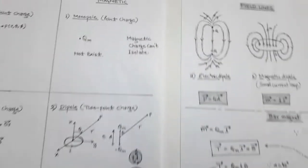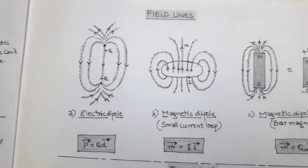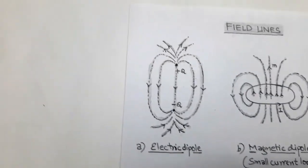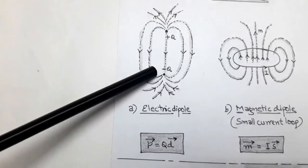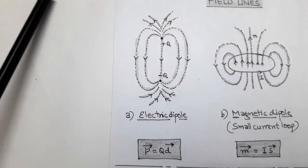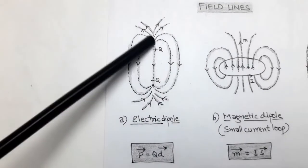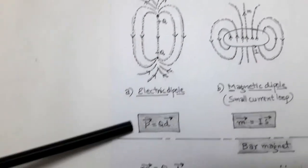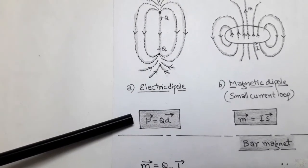Next are the field lines. In the electric dipole, it consists of two point charges separated by a small distance. The electric flux lines originate from the positive charge and terminate at the negative charge, as shown in the figure. The electric dipole has a dipole moment given by small p vector, which equals q times d vector.